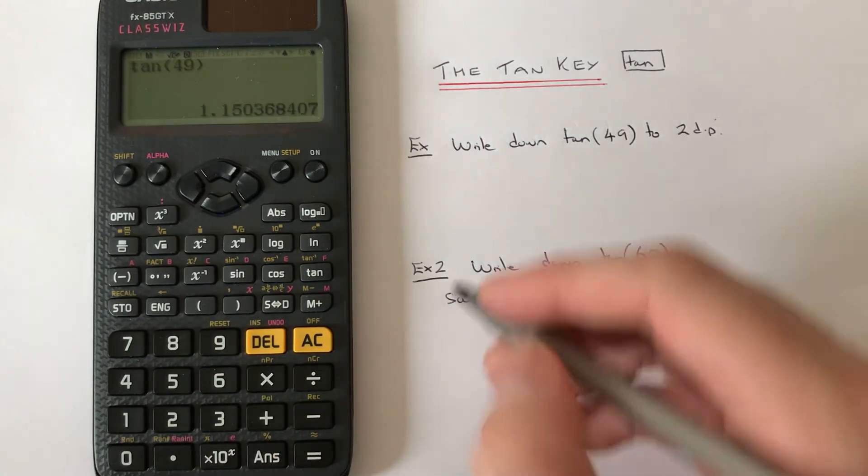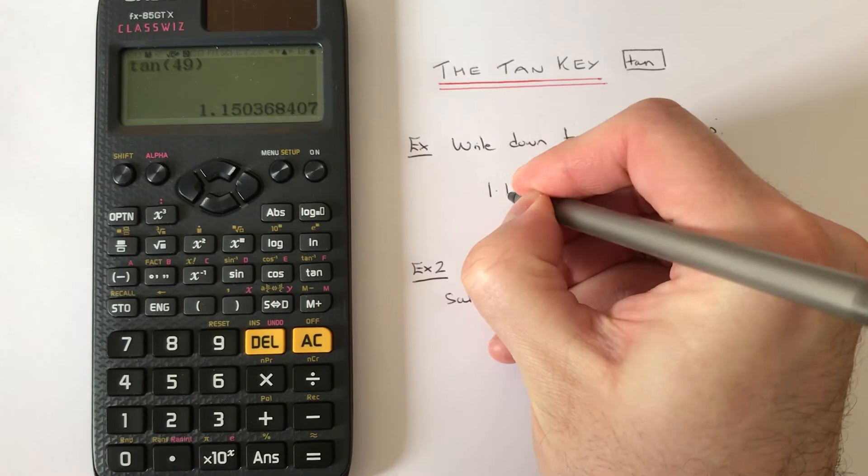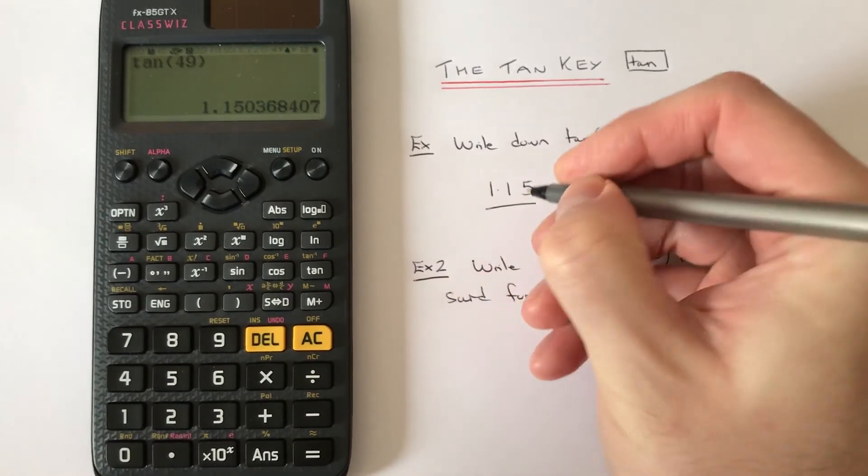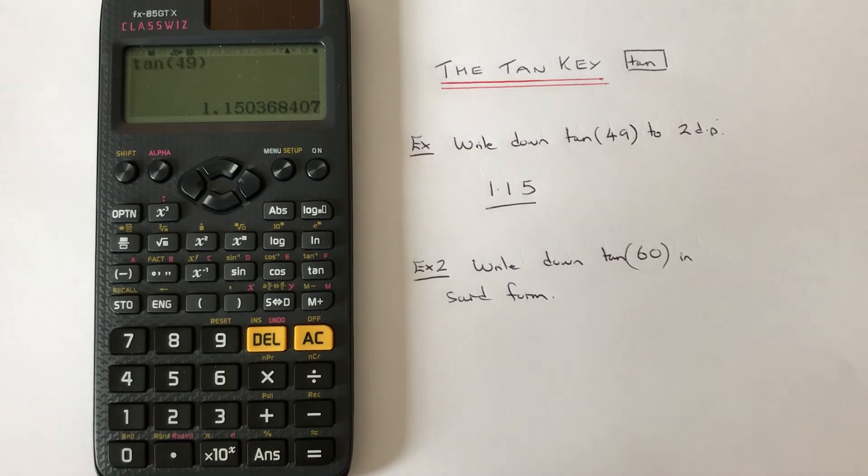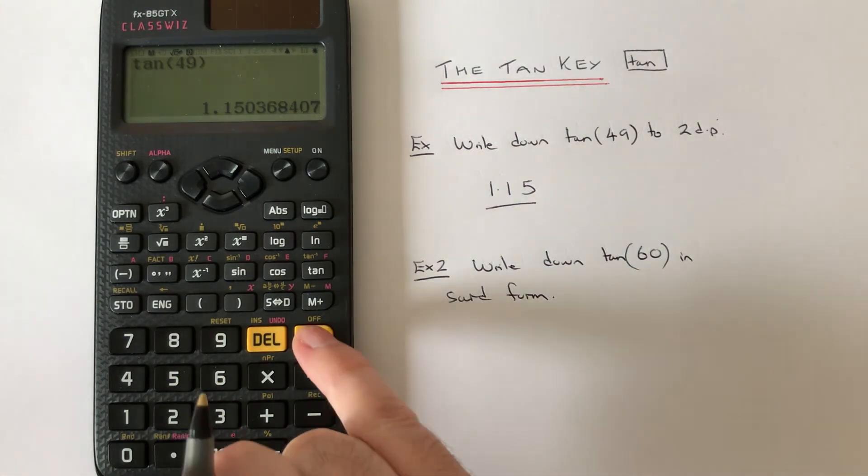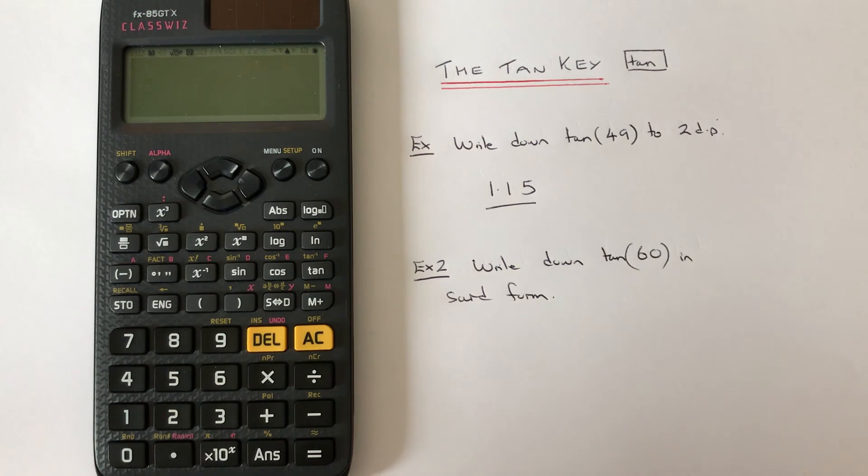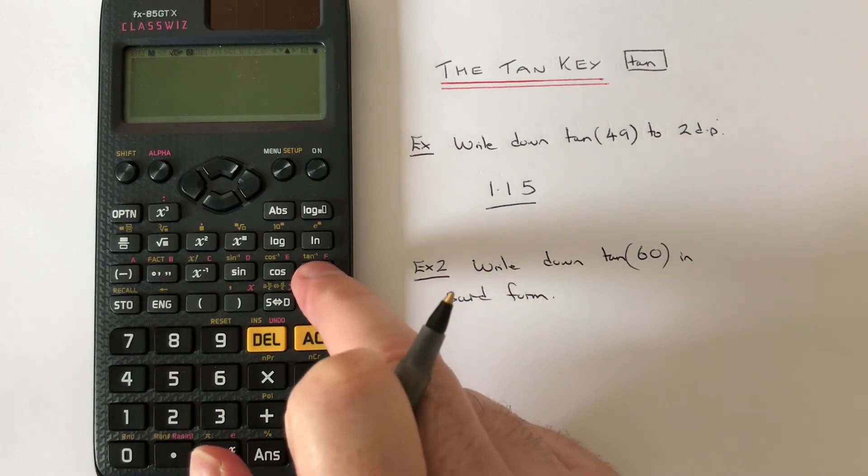Let's have a look at example two. Write down the value of tan(60) in surd form. Certain angles you'll be able to write as exact answers, and tan(60) is one of them. To get its value, just press tan, 60, close your bracket, and we get root 3 as the answer.